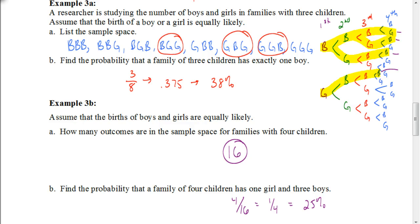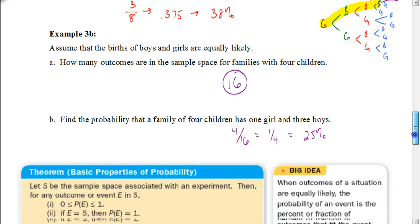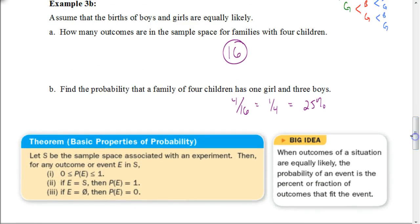Just to share some personal information — I actually have four children and all four are girls. The probability of that happening would be 1 out of 16, or just a little over 6% chance. So we kind of broke the odds there as far as probability is concerned.